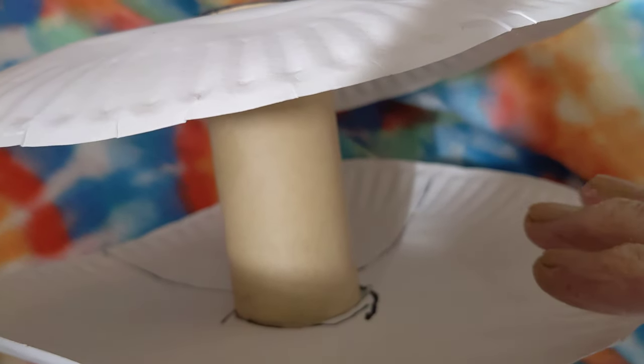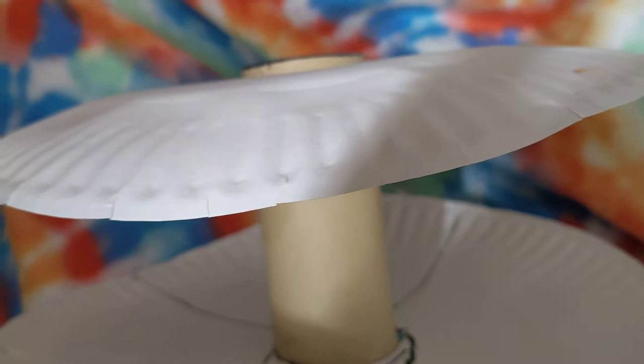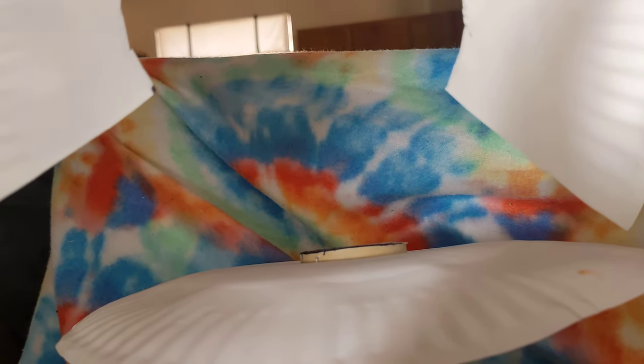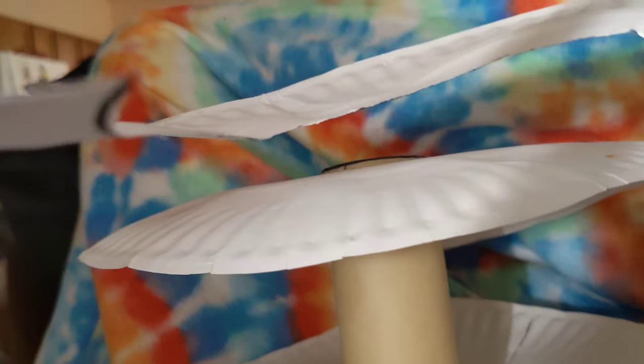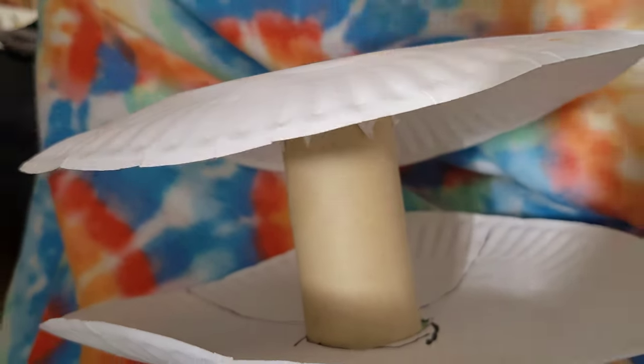But instead of just a solid ring, it would have sections, the missing part there, sections joined together into a ring around there, and maybe one on the bottom and one on the top.